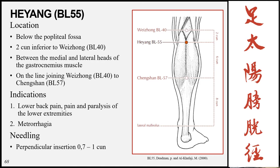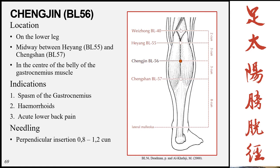The next point is Heyang, Bladder 55, now moved down to the gastrocnemius muscle. It is located below the popliteal fossa, two cun inferior to Bladder 40, between the medial and lateral heads of the gastrocnemius muscle. You can also use the line from Bladder 40 to Bladder 57 — Bladder 57 sits at the tip of the upside-down triangle formed by the gastrocnemius. Indications include lower back pain, pain and paralysis of the lower extremities, and metrorrhagia. Needling is perpendicular 0.7 to 1 cun.